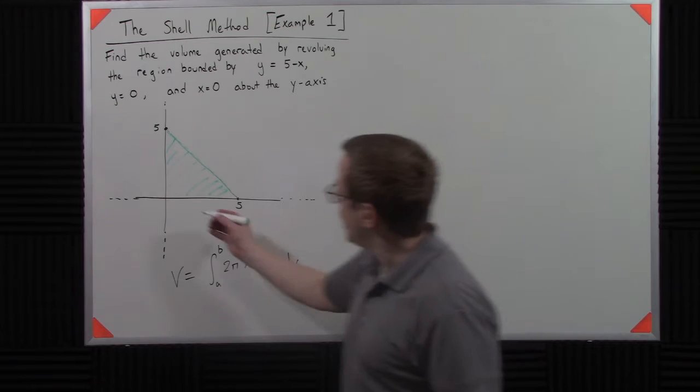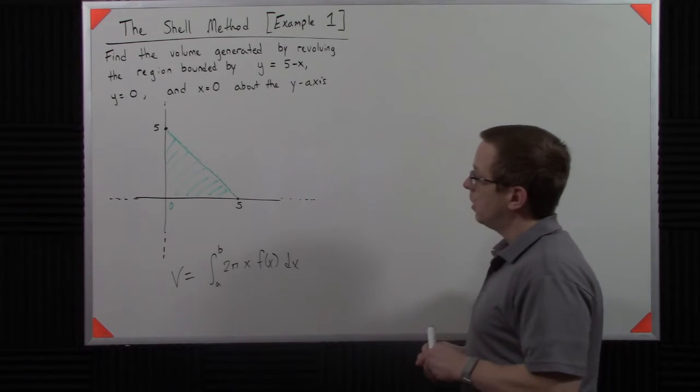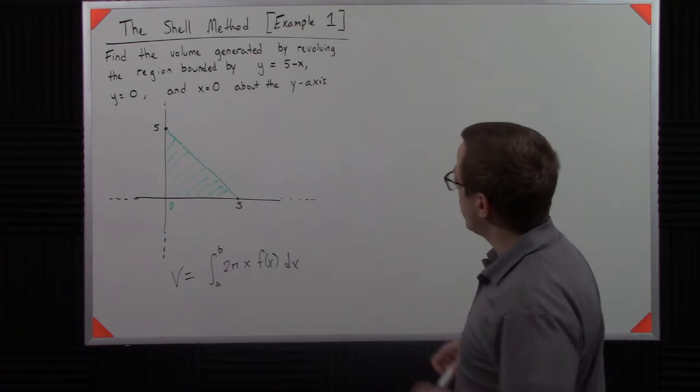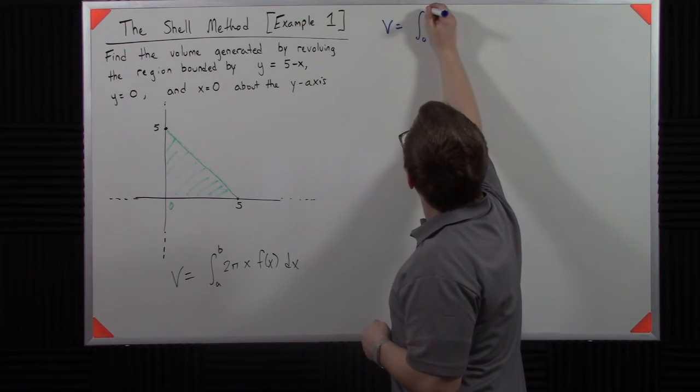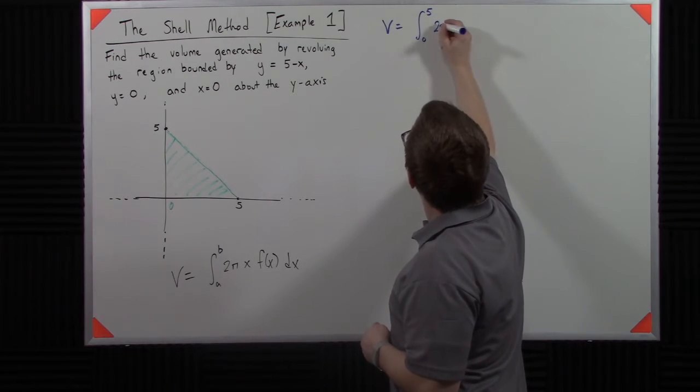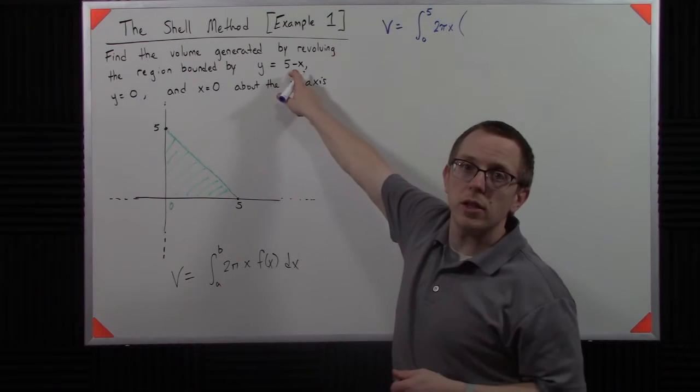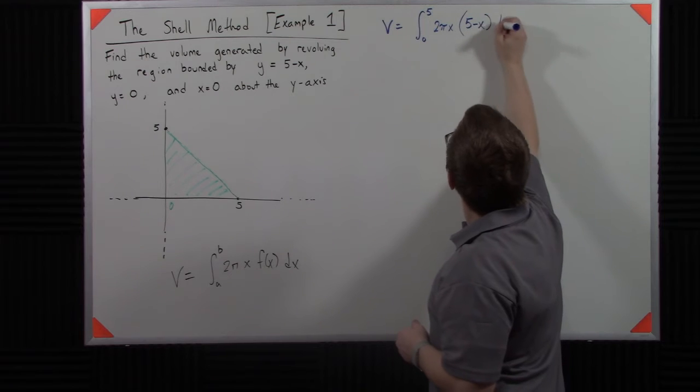So it looks like a is 0 and b is 5. Okay, that gives us a starting point here. We can say that the volume then is from 0 to 5, 2 pi x. Now what's f of x? Well, it looks like that's our function there, 5 minus x dx.